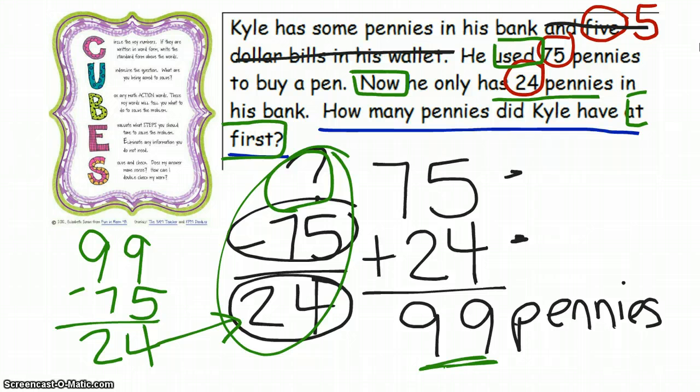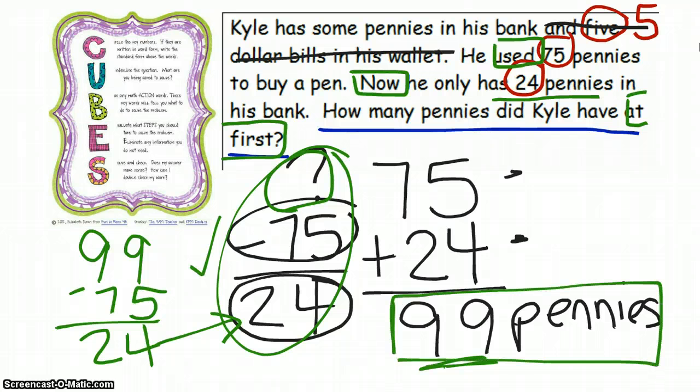So I can answer — does my answer make sense? It sure does. And did I double check my work? I sure did. So now I know my answer is for sure 99 pennies.